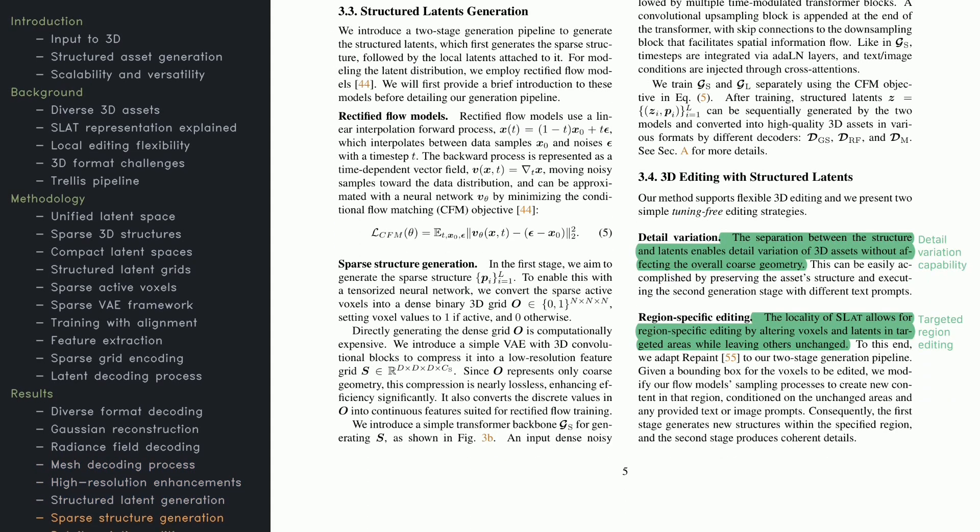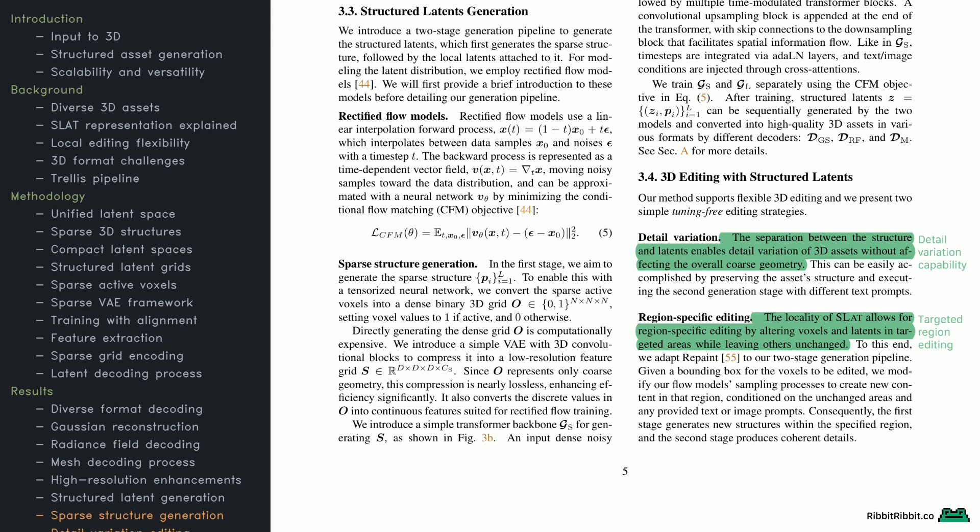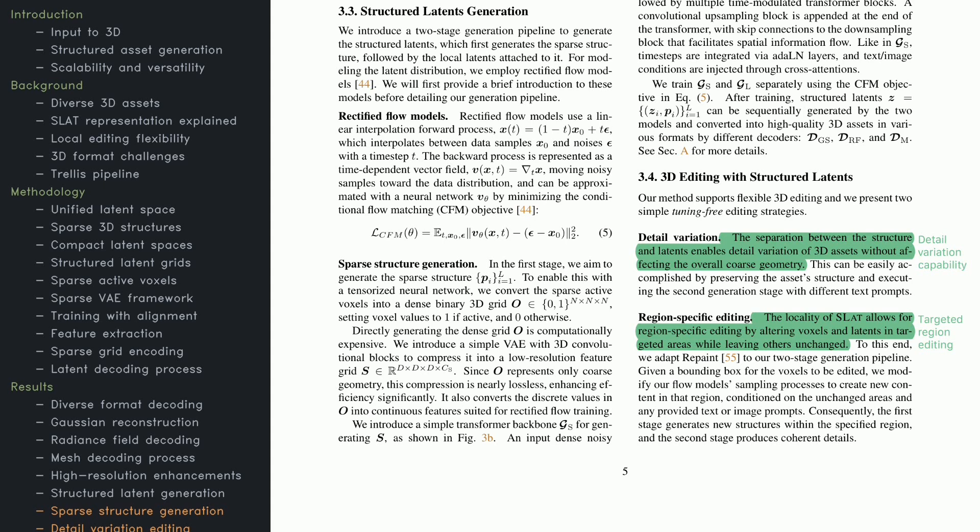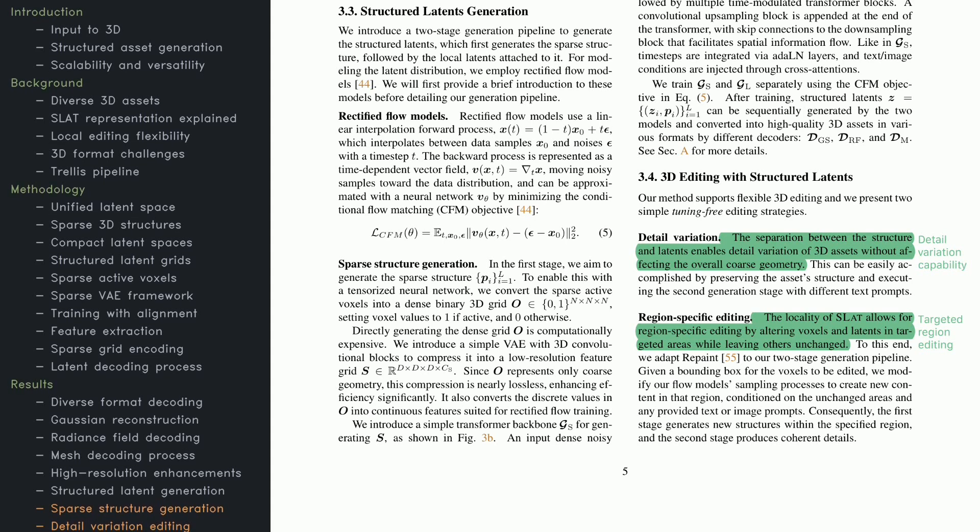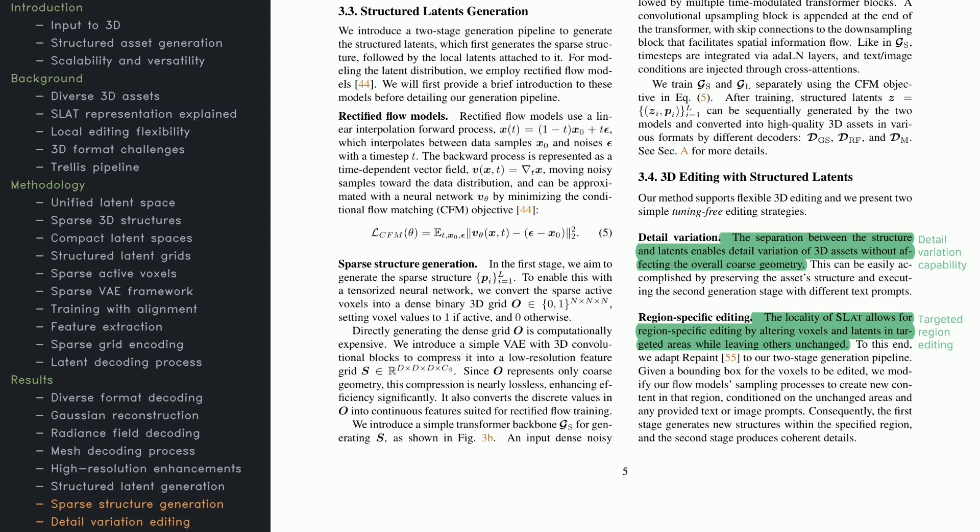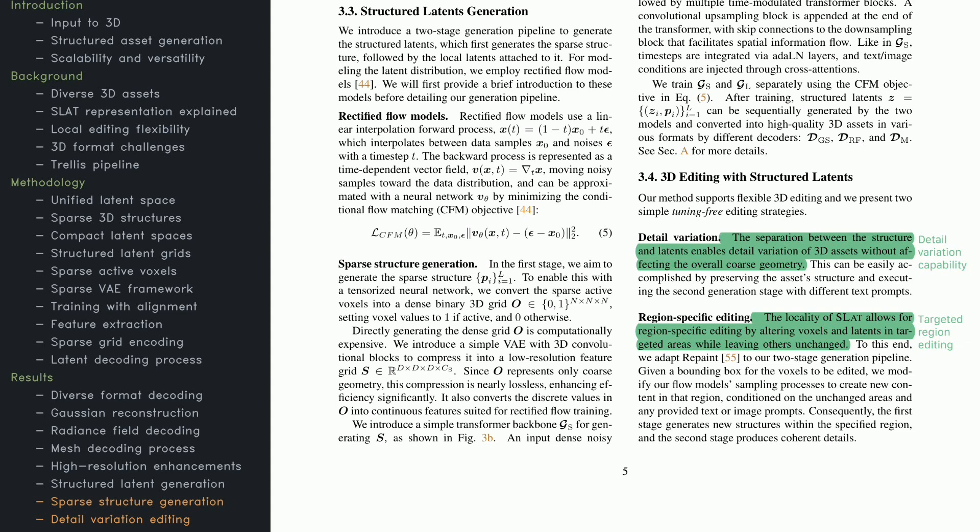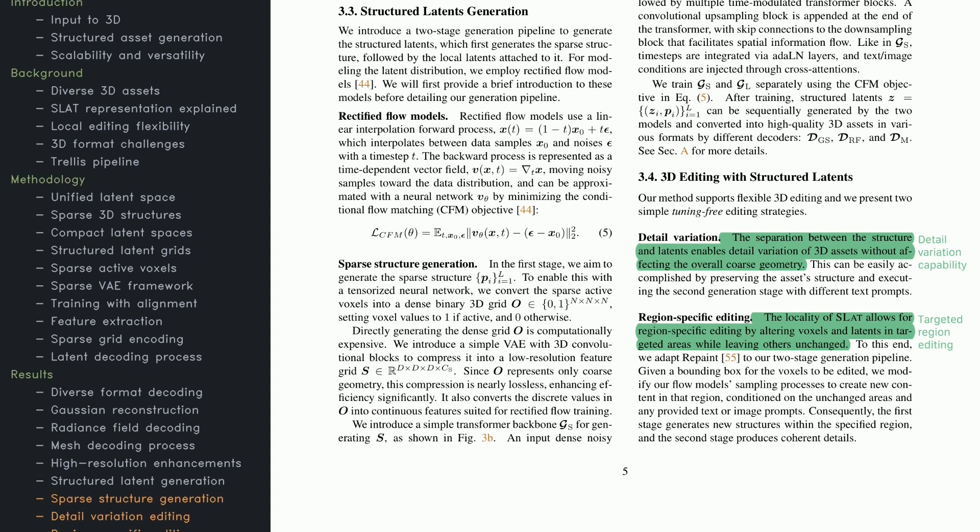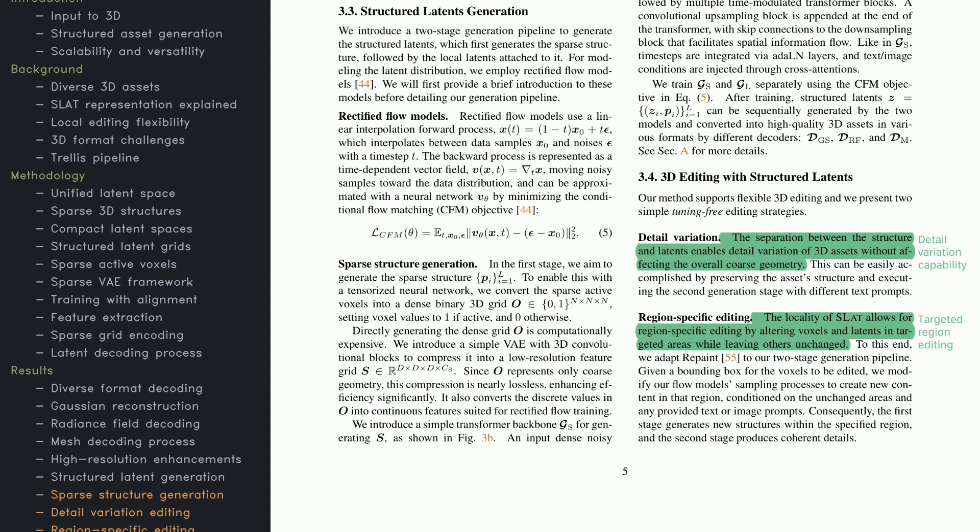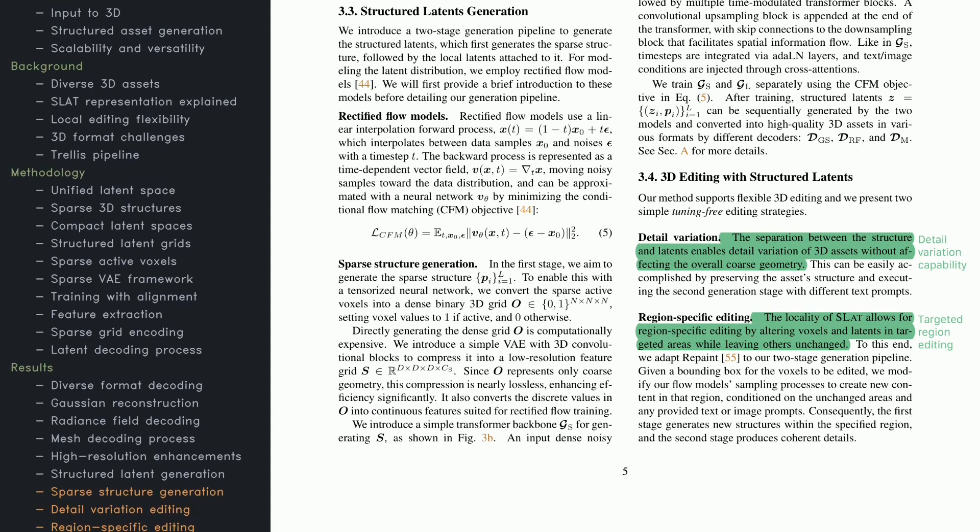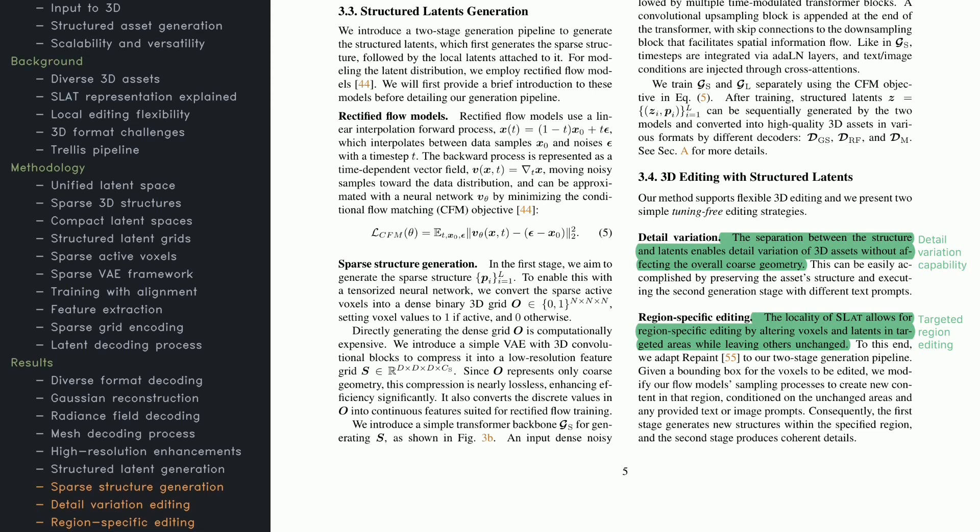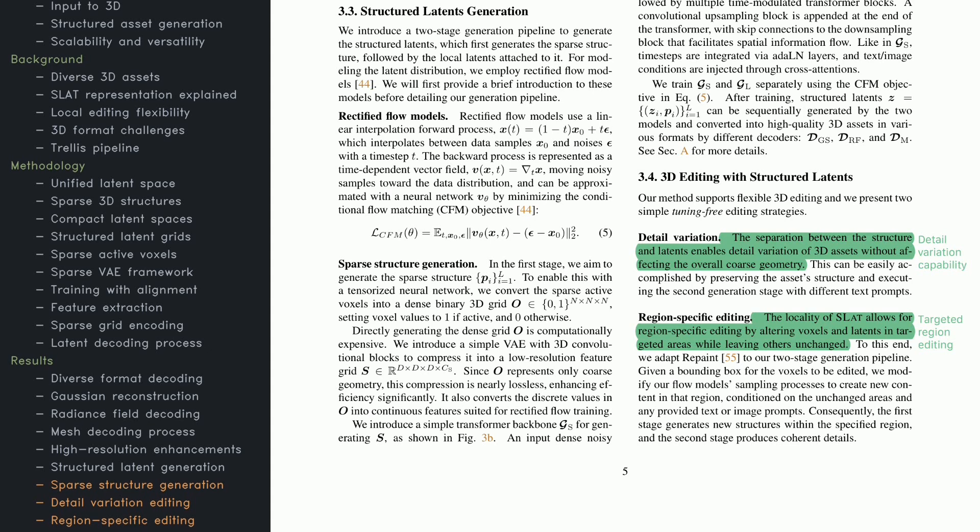Structured latents also simplify 3D editing. You can compress a dense voxel grid into sparse features, preserving overall shape while making the data easier to manipulate. A transformer then learns to predict these features accurately, so that editing remains straightforward. Two editing modes are highlighted. First, detail variation, where you can change textures or small details guided by text instructions. Second, region-specific editing, which allows you to modify just a portion of the object, like removing the arms of a character, without affecting everything else.